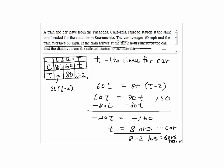Now, since we need to find the distance from the railroad station to the state fair, we have to substitute T, which is eight hours, into the 60T. So this will give us 60 times eight, which is 480 miles.